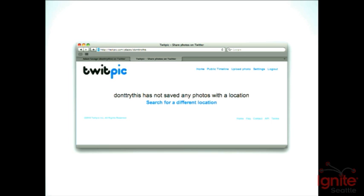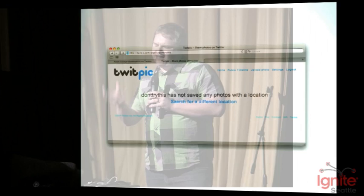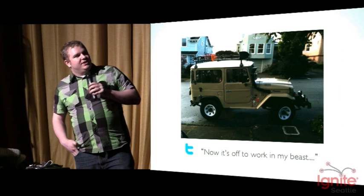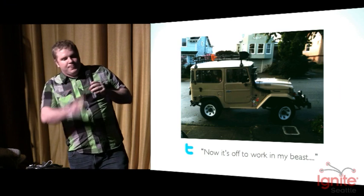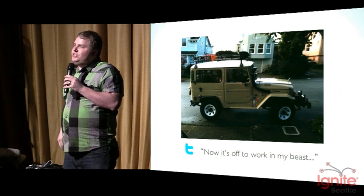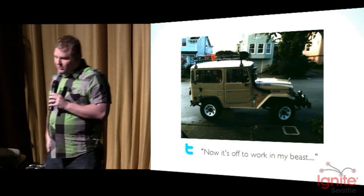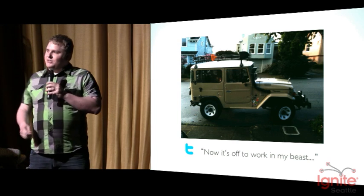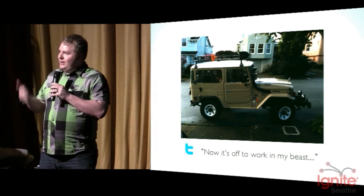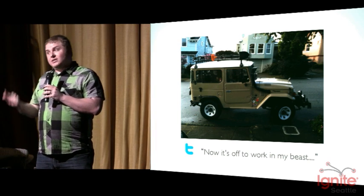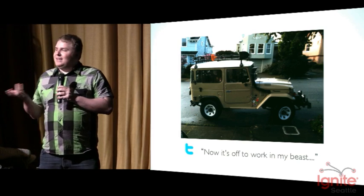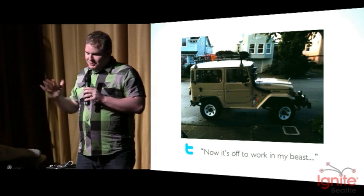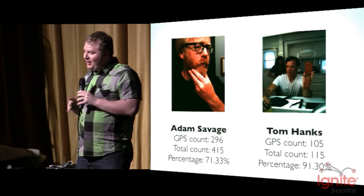Adam had a really interesting case — this has been covered by a lot of people — but he had a photo posted of his truck. This was geo-encoded and it was taken outside his house. And now he's telling us he's off to work. So now we know where he lives, what his car looks like, and that he's going to be gone for a few hours. So as we're robbing the joint, we know to look out for that car.